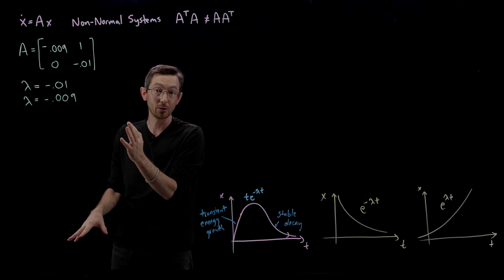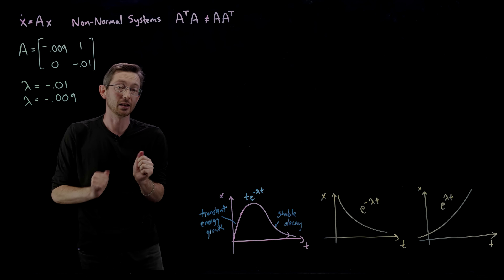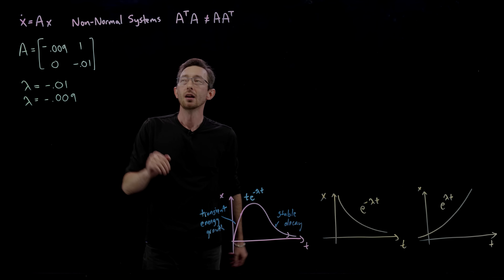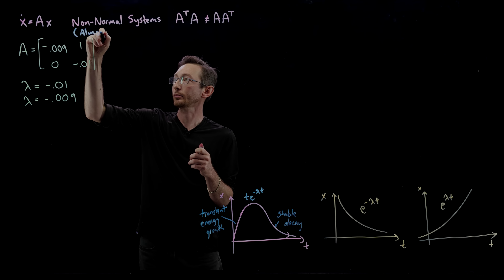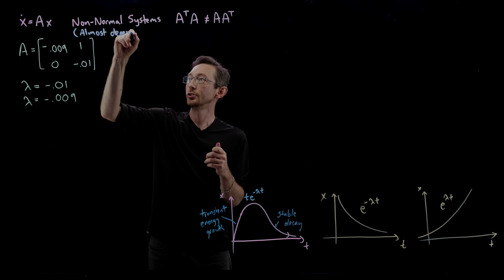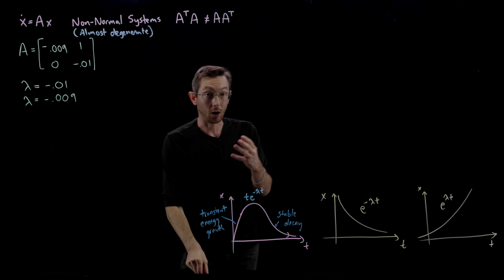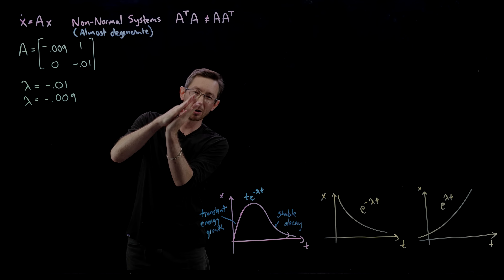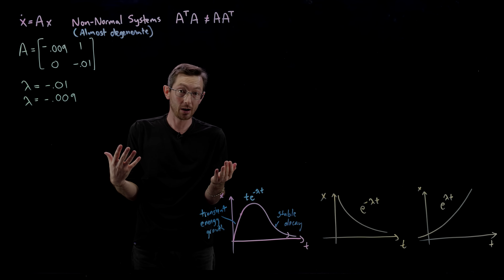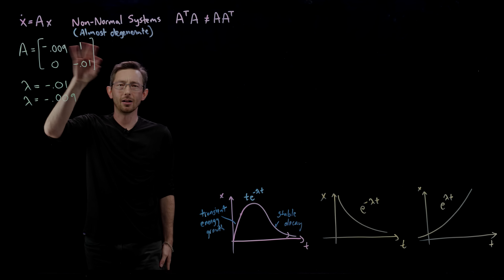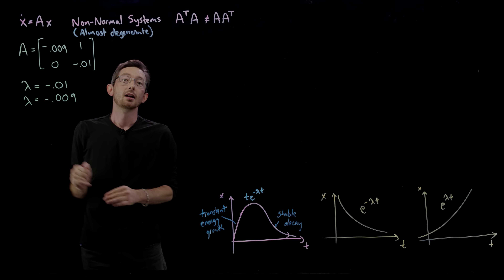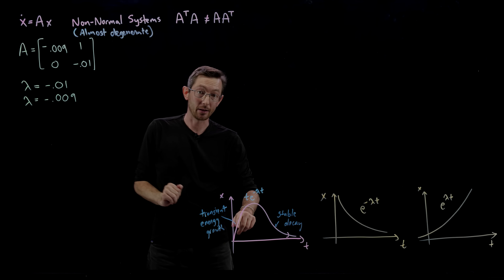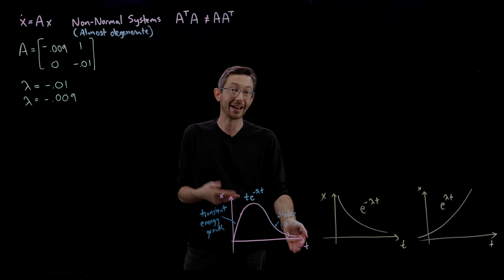These non-normal systems are almost degenerate — meaning if those eigenvectors were perfectly parallel, the determinant of A would be zero and we'd have a real issue. If I perturbed the system just a tiny bit so the eigenvalues were exactly equal, I would get a completely different eigenstructure. I want to convince you that yes, this A matrix does have stable eigenvalues, but I'm going to show you in Python and MATLAB that it has this transient energy growth and decay signature.